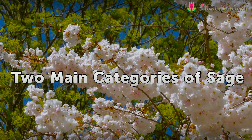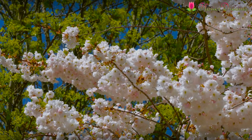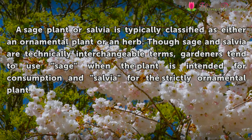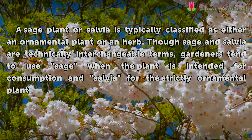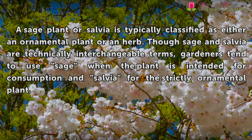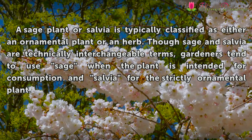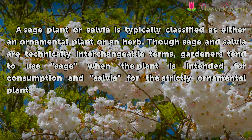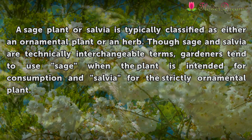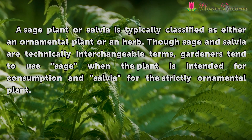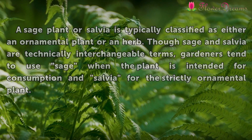Two main categories of sage. A sage plant, or salvia, is typically classified as either an ornamental plant or an herb. Though sage and salvia are technically interchangeable terms, gardeners tend to use sage when the plant is intended for consumption and salvia for the strictly ornamental plant.